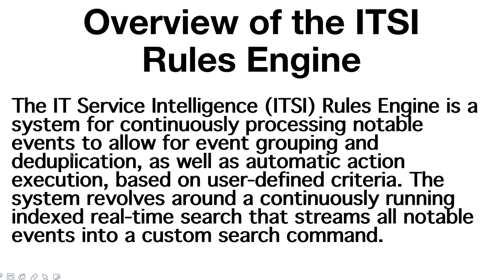The rule engine is a system for continuous processing of notable events. Correlation Search creates a notable event, and the rule engine helps to group them together, deduplicate them, and automate action execution based on user-defined criteria — such as sending an email or any other action. The system revolves around a continuously running indexed real-time search that streams all notable events into a custom search command.